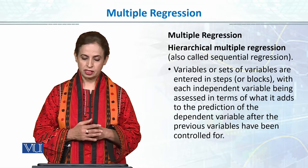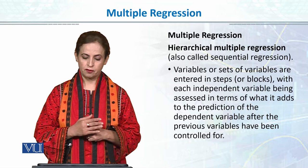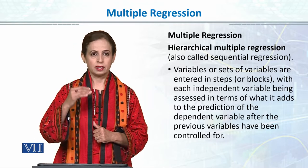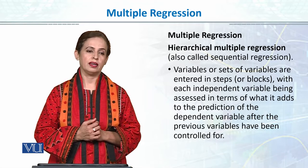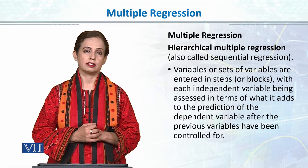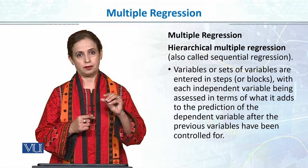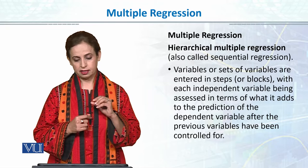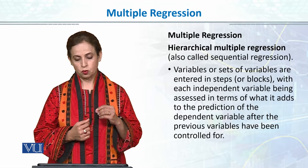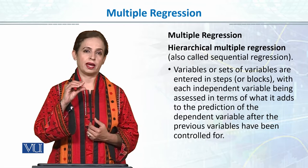The second method is hierarchical regression, also called sequential regression. In sequential regression, sets of variables are entered in steps or blocks. Hierarchical regression is important because it allows us to use causal models. In the hierarchical model, we add blocks in a hierarchy, where each independent variable is assessed in terms of what it adds to the prediction of the dependent variable after the previous variables have been controlled.